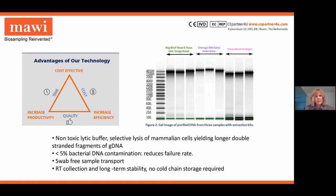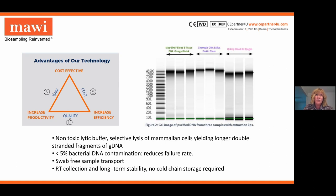A current partner previously had sample-to-answer turnaround times of 8 to 10 days. After adopting the iSwab DNA collection device, that was reduced to a 2-day turnaround time for customers receiving results. Dealing with large high volumes on automation, this represents a significant workflow improvement. Visually, the data demonstrates that across three different extraction kits, the iSwab delivers high quality and quantity of pure genomic DNA.